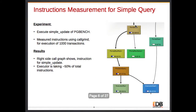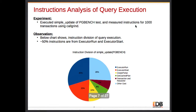For the next query — a simple update — I again ran thousands of transactions for the simple update query in pgbench using the -n flag. Here we can see almost 50% of instructions are taken by only the executor, including executor run and executor start. I divide the instructions into multiple portions showing what part of the complete run takes what percentage of instructions. In this graph I'm most interested in executor run and executor start, which takes almost 50%.